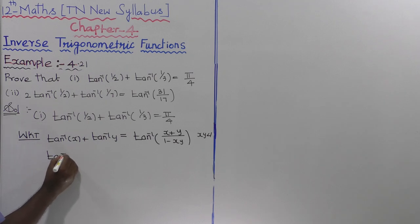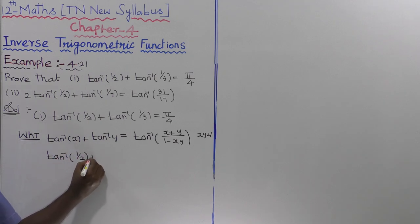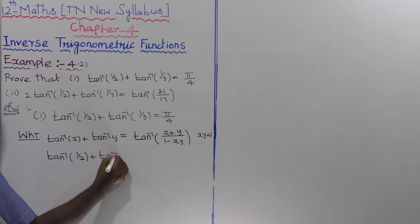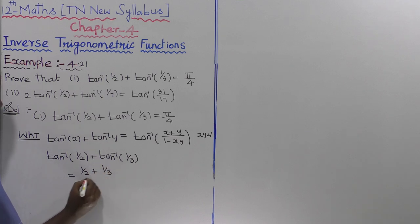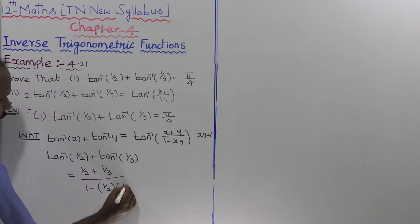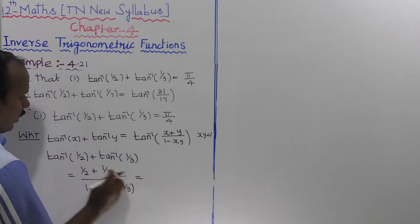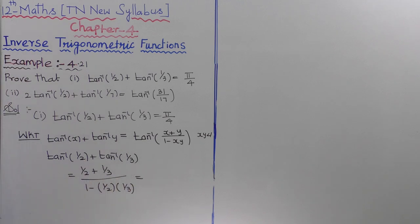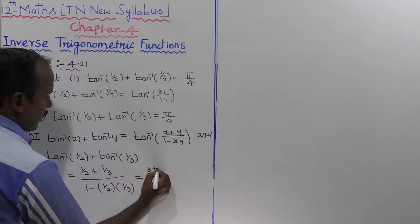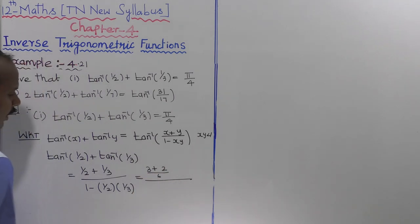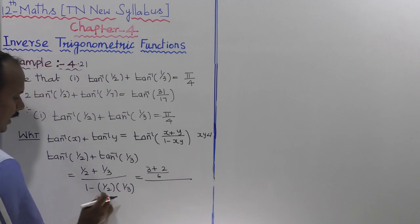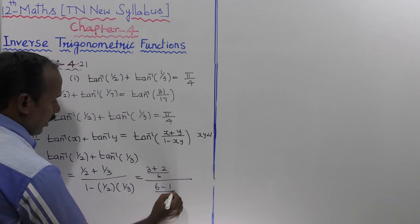Now, tan inverse of 1 by 2 plus tan inverse of 1 by 3 is equal to (1 by 2 plus 1 by 3) divided by (1 minus 1 by 2 into 1 by 3). Taking LCM in the numerator: 3 plus 2 divided by 6, the whole divided by 6 minus 1 divided by 6.